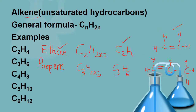The next homologous series is alkene. Alkenes are unsaturated hydrocarbons, meaning hydrocarbons which have double or triple bond between carbon and carbon atom. The general formula is CnH2n. In all the homologous series, it is really very important to remember the general formula. Here we can see that the number of hydrogen atoms is twice the number of carbon atoms present in one molecule.